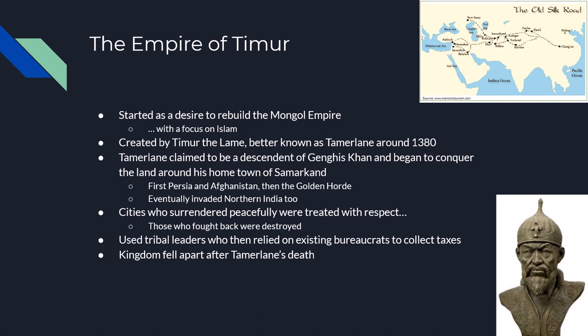He's going to be really busy around the year 1380. He claims to be a direct descendant of Genghis Khan, and he conquers the area of his homeland known as Samarkand. From there, he exports his conquering to Persia, Afghanistan, and Northern India. Tamerlane treats cities that surrender peacefully and respectfully, but destroys those that resist him. Much like Genghis Khan, he too used psychological warfare — he would build pyramids out of skulls to show that he meant business.